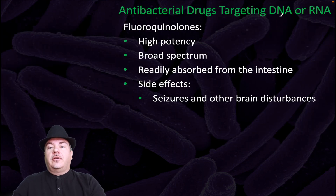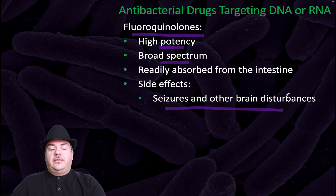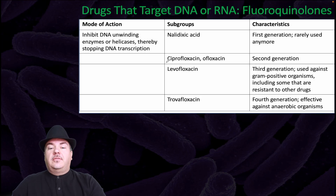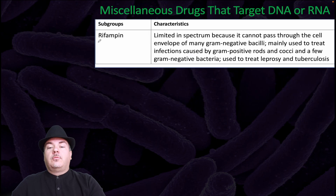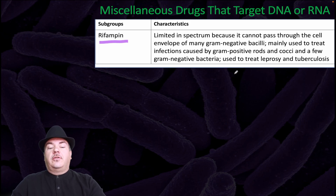Antimicrobial drugs targeting DNA or RNA include fluoroquinolones. They have high potency and broad spectrum. They're readily absorbed by the intestine but have side effects such as seizures and other brain disorders. Examples include ciprofloxacin, levofloxacin, and trovafloxacin. Rifampin is limited in spectrum because it cannot pass through the cell envelope of many gram-negative bacilli. It is mainly used to treat infections caused by gram-positive rods and cocci and a few gram-negative bacteria, as well as leprosy and tuberculosis.